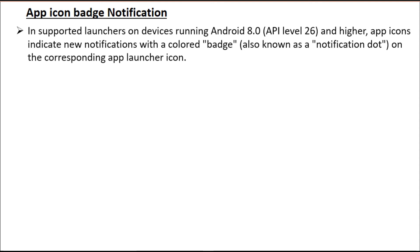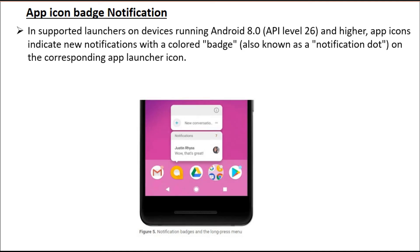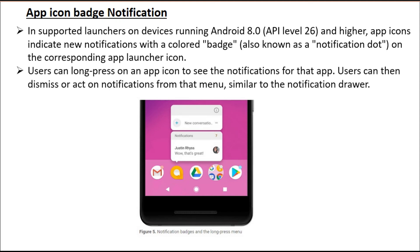App icon badge notification: on supported launchers on devices running Android 8.0 and higher, app icons indicate new notifications with a colored badge, also known as a notification dot, on the corresponding app launcher icon. Here you can see a small dot on the launcher icon that indicates notifications. Users can long press on an app icon to see the notifications for the app, and can then dismiss or act on notifications from that menu.